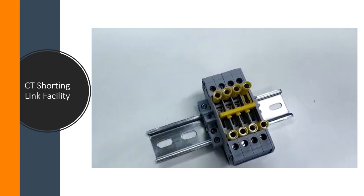So basically, you can add on these shorting links during testing, erase on the CT, generate the circuit, and inject it into the relay for testing. Then you can test and restore the link. Before adding on, you will enter the shorting links and open them. This is a facility that allows you to perform different testing in the field.